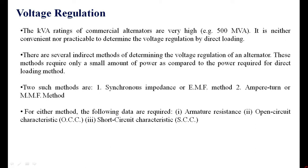These methods require only a small amount of power as compared to the power required for the direct loading method. If you want to directly load a 500 MVA alternator, we need that much load in the laboratory, which is not possible and the power required is also more. Therefore, indirect methods need a very small amount of power to determine the voltage regulation.